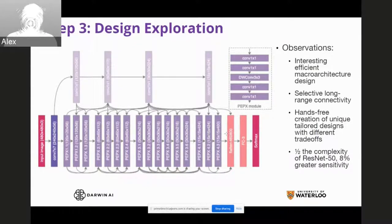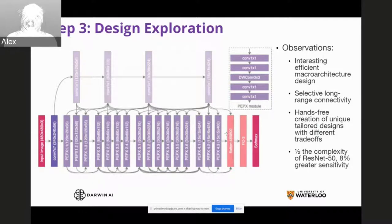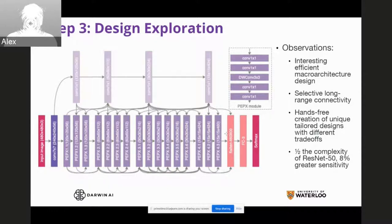The outcome is quite interesting — this is the COVIDNet architecture created by the machine. One interesting observation is its very efficient macro architecture design, which differs greatly from hand-created designs. We see very selective long-range connectivity — hubs of highly long-range connectivity without a huge amount of connectivity in between — allowing a nice balance between efficiency and modeling representation power. In this particular case, we have a COVIDNet architecture that has half the complexity of a standard ResNet-50 but has 8% greater COVID-19 sensitivity.